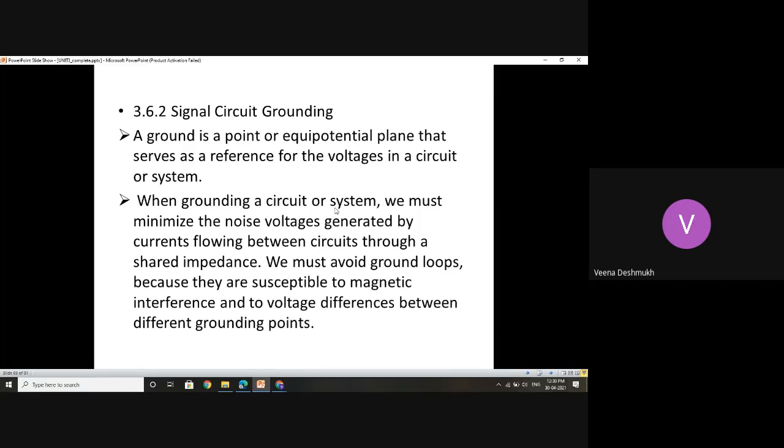So when grounding a circuit or a system, we must minimize the noise voltages generated by currents flowing between circuits through a shared impedance. Now what exactly is the meaning of this? Suppose I have one circuit, say Arduino, or the sensing network. Another one is the power supply by which it is powered. If these two units are not maintained at the same potential, if there exists between these two voltage, then whatever measurements I make with the sensor network, those voltages, I cannot compare them with the ones from the power supply.